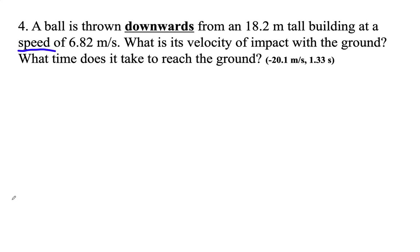So here is this building, 18.2 meters tall. This ball is given an initial velocity that's downward, so the initial velocity is going to be negative 6.82. The displacement from here to the ground, isn't that down? S is going to be negative 18.2 meters.